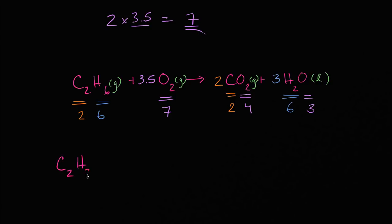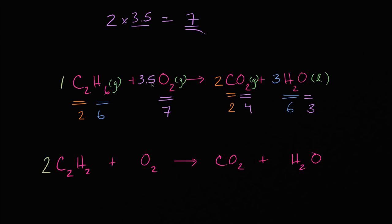So let's write the whole reaction over again. I have my ethane plus some molecular oxygen — they combust and yield carbon dioxide gas and liquid water. Multiplying all coefficients by two: the ethane coefficient goes from one to two, the O2 coefficient goes from 3.5 to seven, the CO2 coefficient goes from two to four, and the water coefficient goes from three to six. We're multiplying all coefficients by two, just like in an algebraic equation. And now we are fully balanced with whole number coefficients.